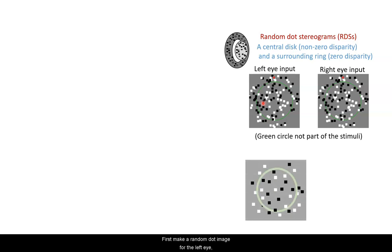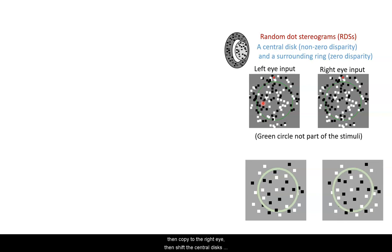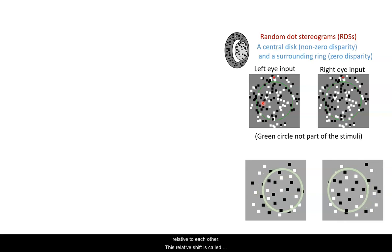First, make a random dot image for the left eye, then copy to the right eye, then shift the central disk relative to each other. This relative shift is called binocular disparity.